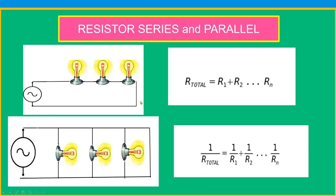The next is resistor in series and parallel. So this is the formula for series resistor. R total equals R1 plus R2 plus Rn.